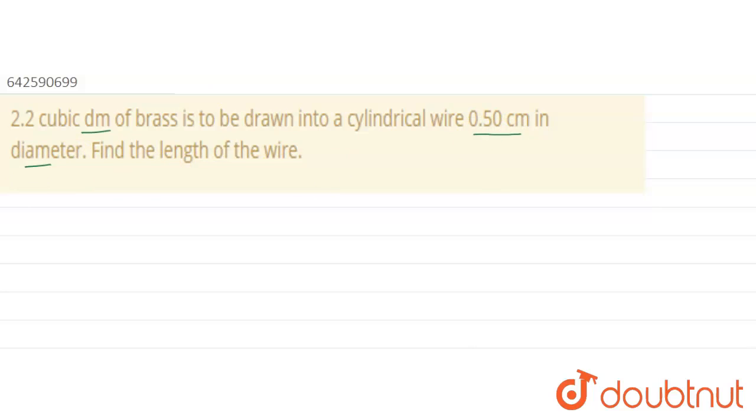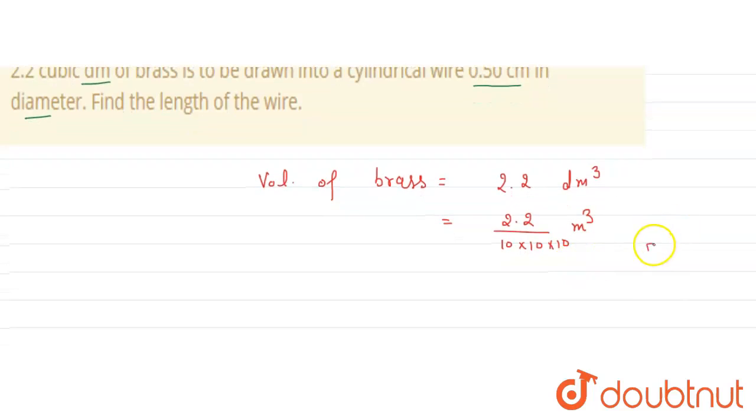So write the given values. What is the volume of brass? Volume of brass is equal to 2.2 decimeter cube, or I can say 2.2 upon 10 multiplied by 10 multiplied by 10 meter cube, because we know that one meter is equal to 10 decimeter.